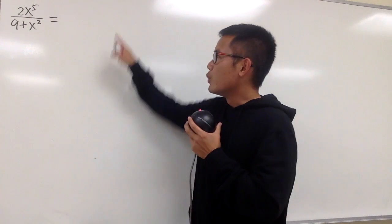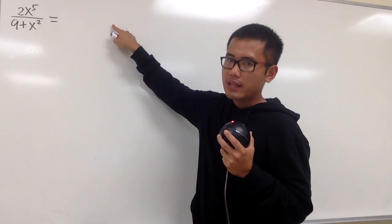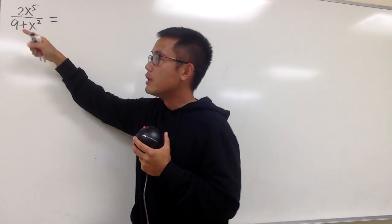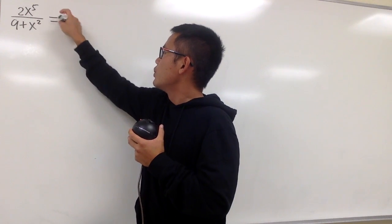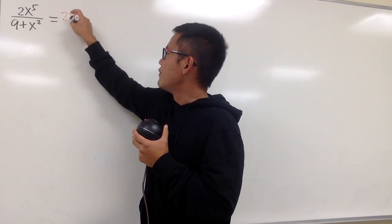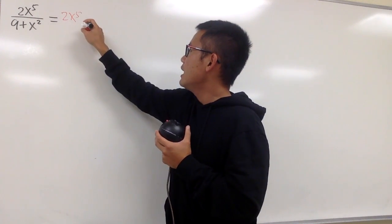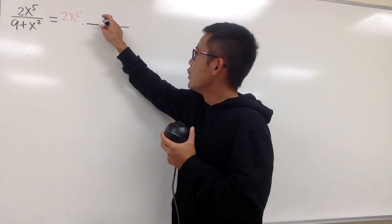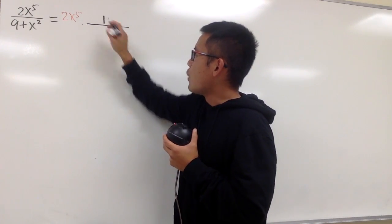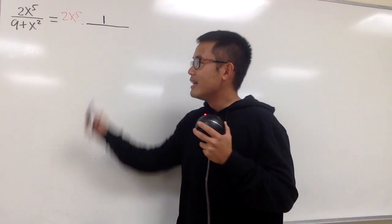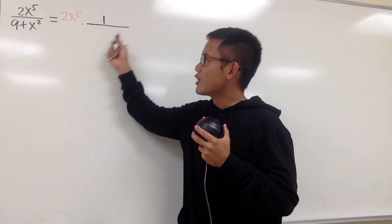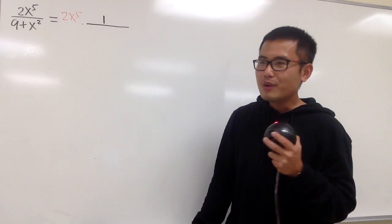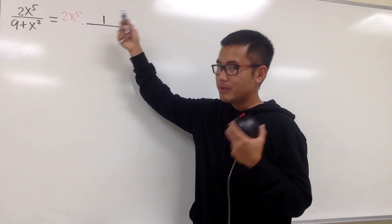Remember, for our best friend, we must have a 1 on the top, but here we have 2x to the fifth power. So let's look at this as 2x to the fifth power times another fraction, and for this fraction we can have the 1 that we need on the top. This is going to be the best friend part, which requires the 1 on the top.